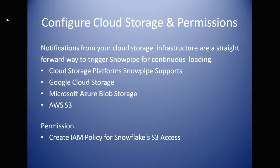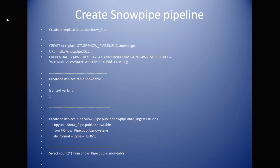To load data using the first approach — the cloud storage-based method — we need to create a cloud storage with the appropriate permissions. For example, with AWS S3, we need an S3 bucket and an IAM policy defined so that the Snowflake stage can access the S3 bucket. We are going to learn this in the hands-on lab. We will create a Snowpipe pipeline that loads JSON files from a source system in real-time or near real-time into a Snowflake table.